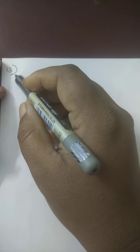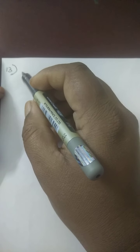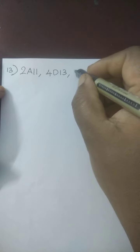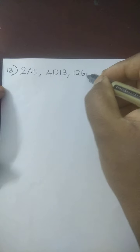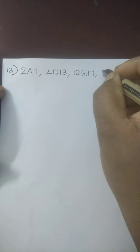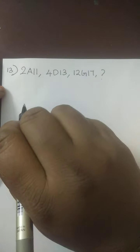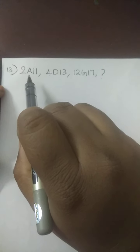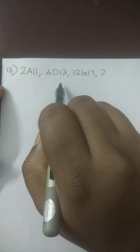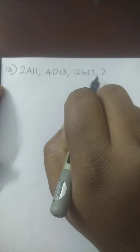Now we are moving to 13th sum and the question is 2A11, 4D13, 12G17, question mark. Again I am reading the question: 2A11, 4D13, 12G17, question mark.